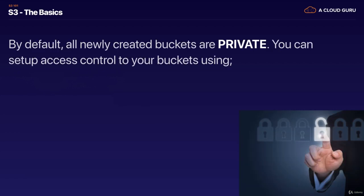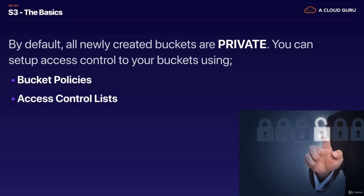We learned in the last lecture that by default, all buckets, when we create them, are private. And that was those four little check boxes. You can set up access control to your buckets using bucket policies and access control lists. Bucket policies work at a bucket level, whereas access control lists go all the way down to individual objects.